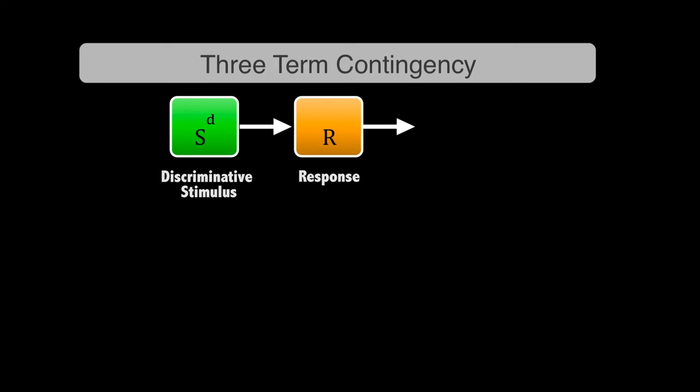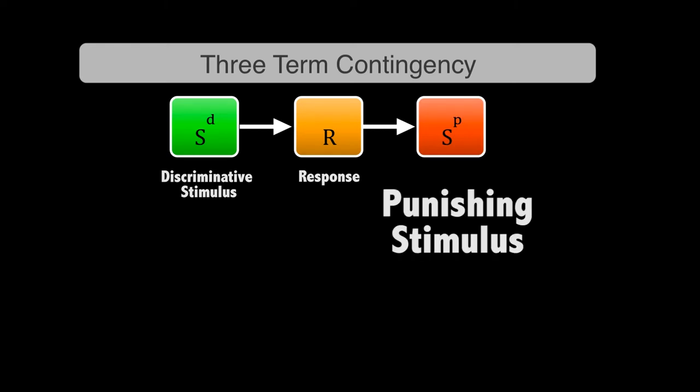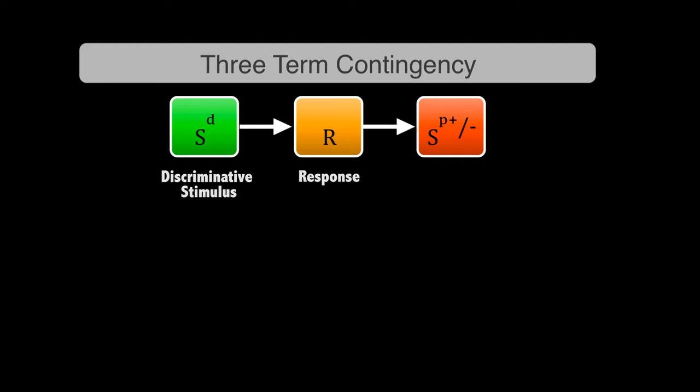Which leads us to another consequence notation that exists, which is SP, or a stimulus that punishes. So then you would have an SP+ and an SP-, positive punishment and negative punishment. So that's the notation for that third term, that consequence piece, the third term in the three-term contingency.